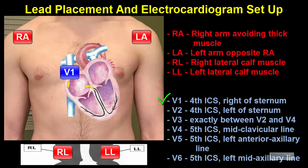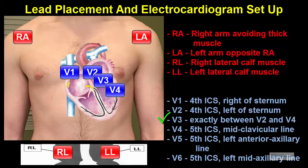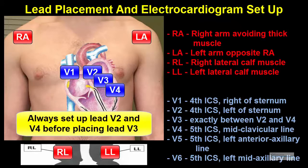V1 is placed in the 4th intercostal space between ribs 4 and 5, just to the right of the sternum or breastbone. V2 is placed in the 4th intercostal space between ribs 4 and 5, just to the left of the sternum. V3 is placed exactly between V2 and V4. V4 is placed in the 5th intercostal space between ribs 5 and 6, in the midclavicular line. When setting up the electrodes, always place leads V2 and V4 before placing lead V3.